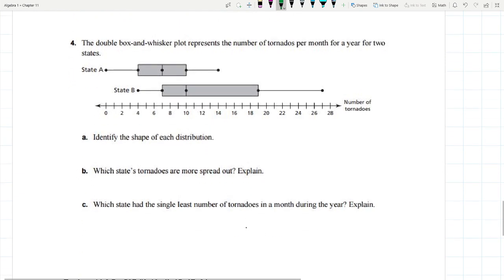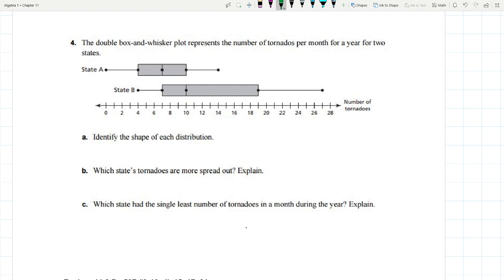Let's try another one. The double box and whisker plot represents the number of tornadoes per month for a year for two states. There's state A and there's state B. A asks us to identify the shape of each distribution. So let's talk about just state A. If I go 4 minus 0, this is at 4 minus 0. And I'm also going to do this upper quartile area, above Q3. Let's see, that's at 14. This equals 4. 14 minus 10, this equals 4. Hey, that's pretty symmetric. That's like the same.